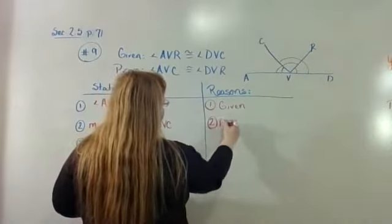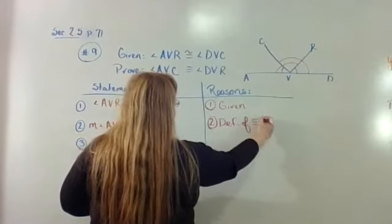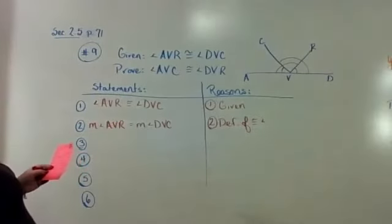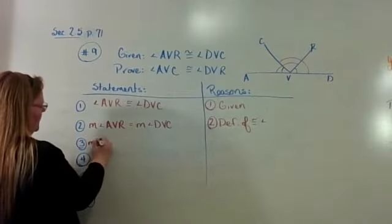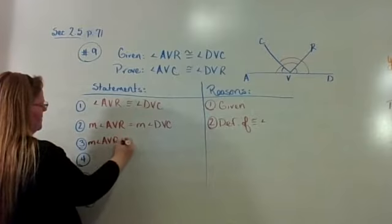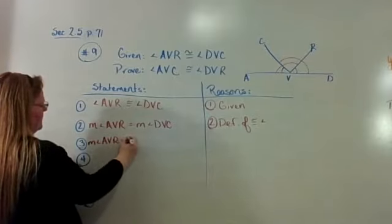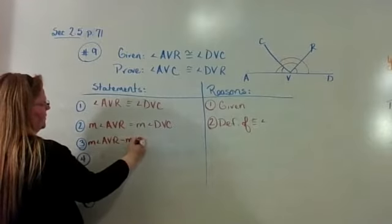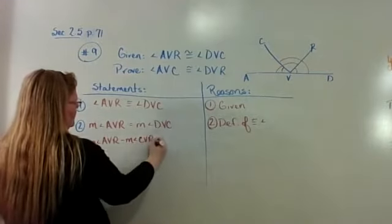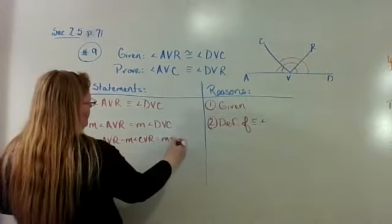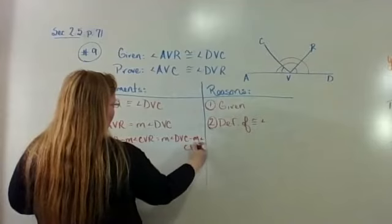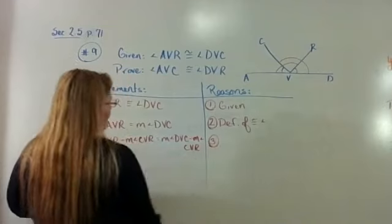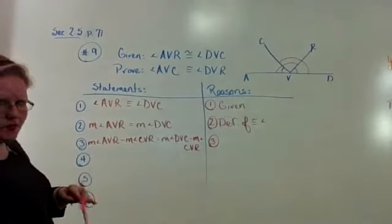And that's the definition of congruent angles. Then I hope you said something to the effect of: measure of angle AVR minus measure of angle CVR equals the measure of angle DVC minus the measure of angle CVR. And that was the subtraction property of equality.